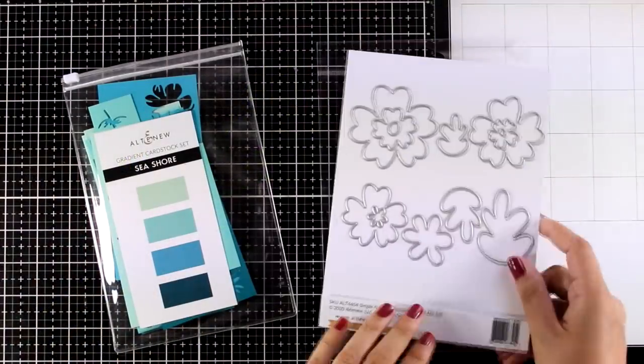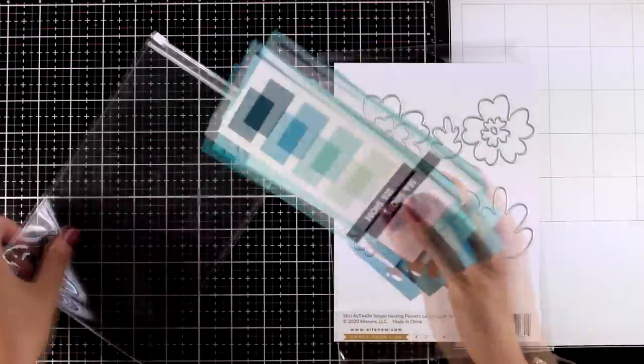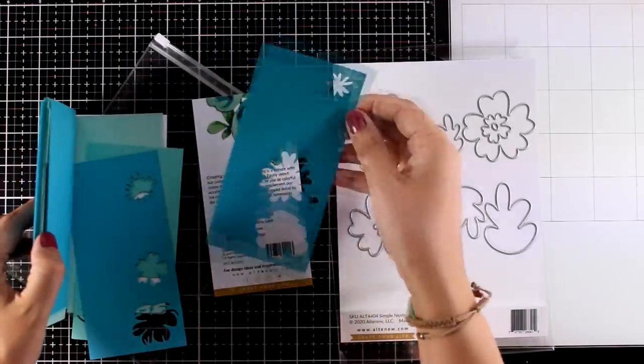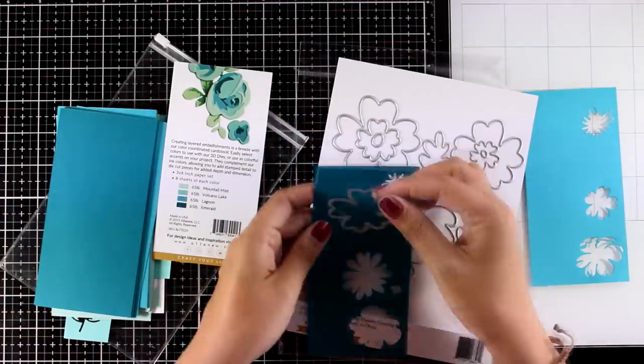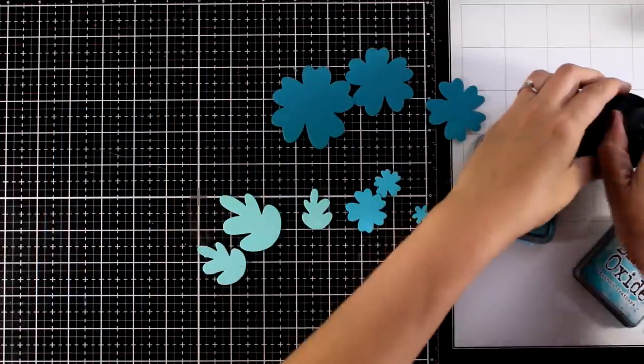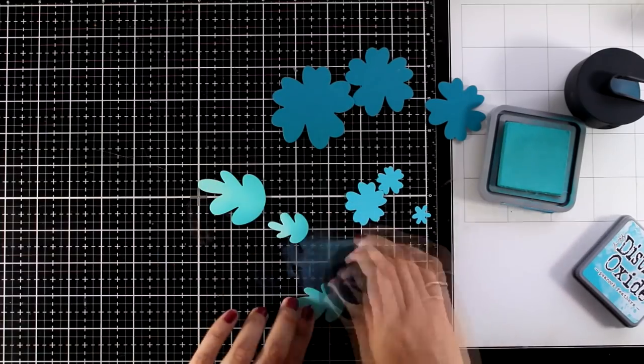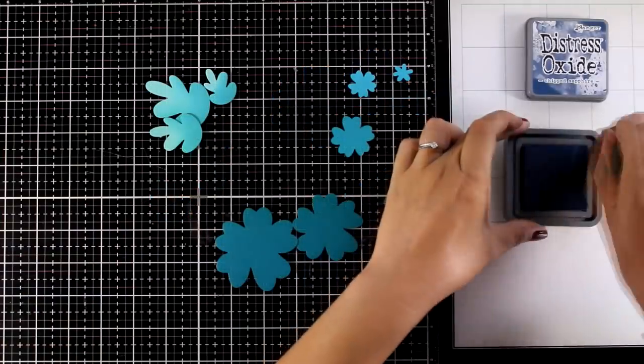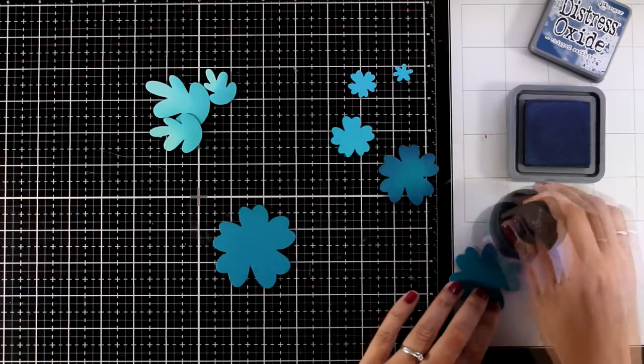My next card is going to be simpler and for that I'm going to use dies from the Simple Nesting Flowers layering die set. I'm going for a monochromatic look and feel for this card so I'm going to use mainly shades of blue for the leaves and the flowers. So for die cutting everything I'm using cardstock from the Seashore gradient cardstock set. I have all the pieces die cut here and you can see the three different colors. Just to add a little bit of something extra on the die cuts and to bring them more to life I'm going to ink them up with different colors of Distress Oxide ink. Just a shade darker than the actual cardstock.